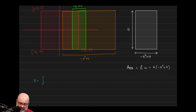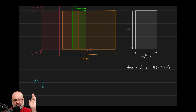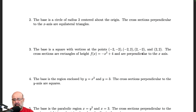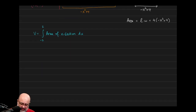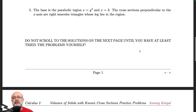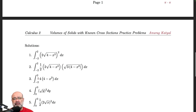Now we can write the integral. We start slicing at the leftmost endpoint, negative 2, and continue to the rightmost endpoint, positive 2. We integrate the area of cross section with respect to x because the cross sections are perpendicular to the x-axis. This becomes the integral from −2 to 2 of 4(4 − x²) dx.